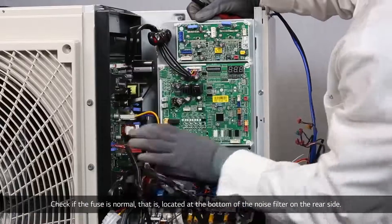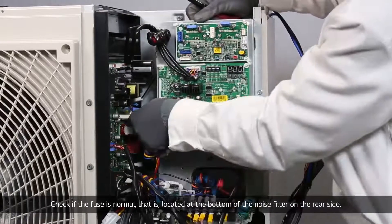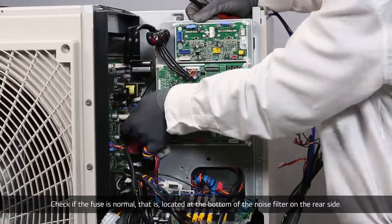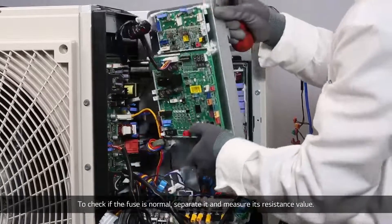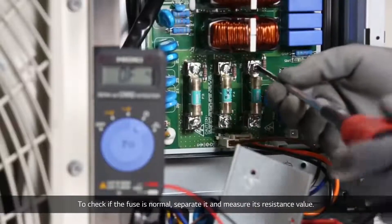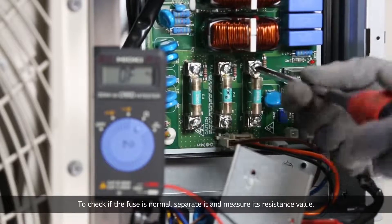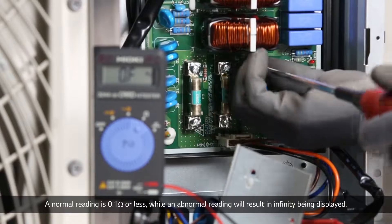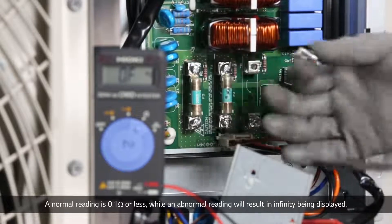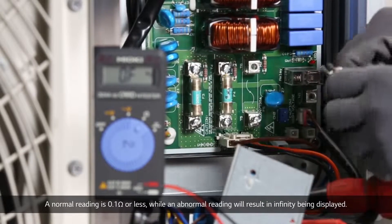Check if the fuse is normal, that is located at the bottom of the noise filter on the rear side. To check if the fuse is normal, separate it and measure its resistance value. A normal reading is 0.1 ohm or less, while an abnormal reading will result in infinity being displayed.